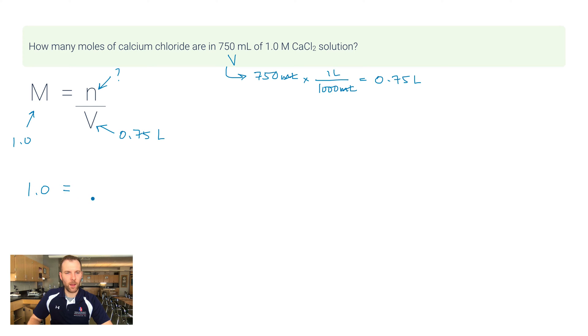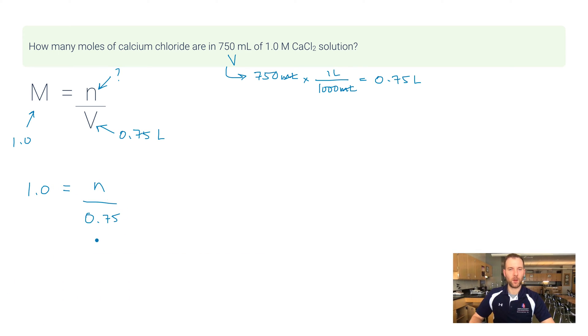So let's plug in what we have. We've got 1.0 for M, and we don't know n, but we know the bottom is 0.75. Now there's a couple ways to look at this: one has got to be equal to 0.75 over 0.75. The other way to do it is algebraically where you multiply both sides by 0.75, and that gives you 0.75 moles equals n. Either way you think about it, you'll get the same amount of moles - it's 0.75 moles in this example.